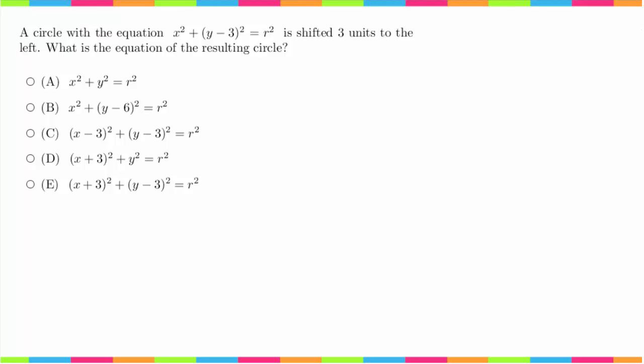We are now working on question number 30, and this question says a circle with the equation x squared plus y minus 3 squared equals r squared is shifted 3 units to the left. What is the equation of the resulting circle?